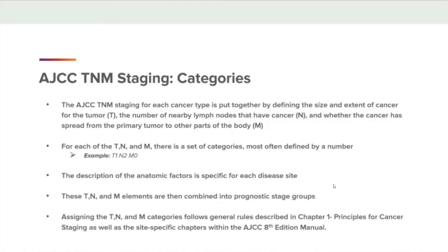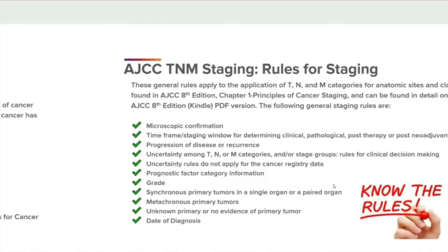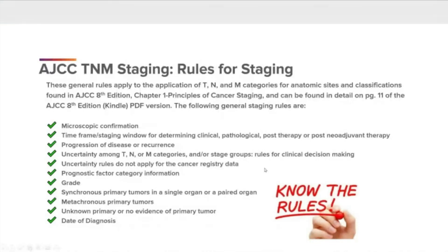These TNM elements are then combined into prognostic stage groups. Assigning the TNM categories follows general rules described in Chapter 1, Principles of Cancer Staging, as well as the site-specific chapters within the AJCC 8th Edition Manual. These general rules can also be found in detail on page 11 of the AJCC 8th Edition Kindle PDF version.